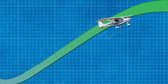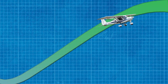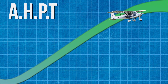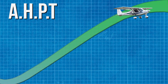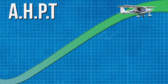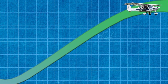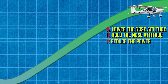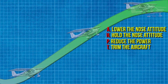As we approach the top of our climb, we will use the acronym APT: Attitude, Hold, Power and Trim. Simply lower the nose and hold the nose attitude in level flight, and reduce the power so we stop climbing. Once this is done, you can trim out any excess pressure in the stick.